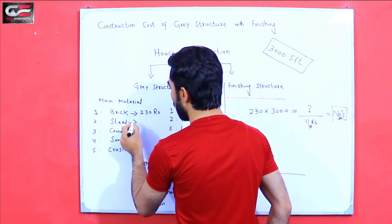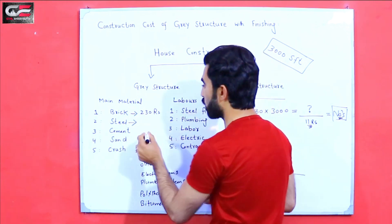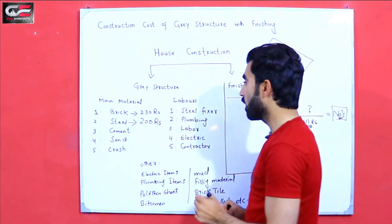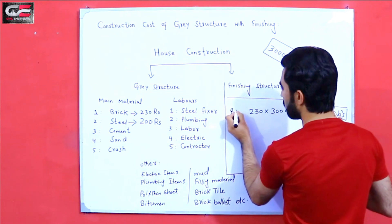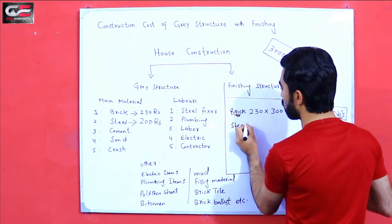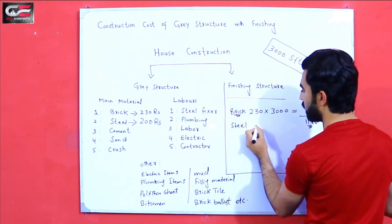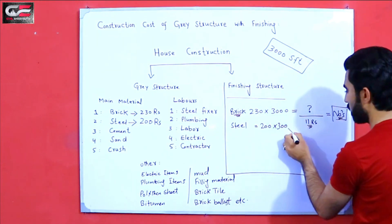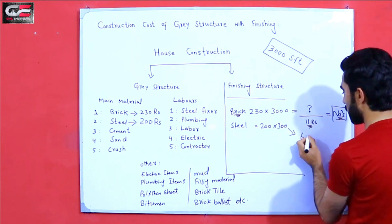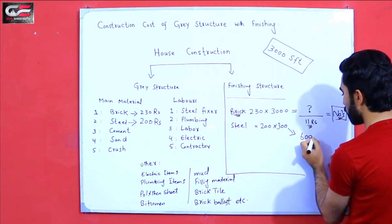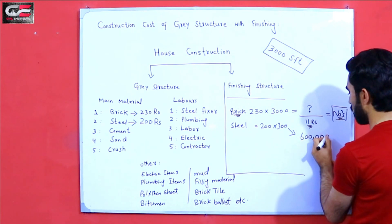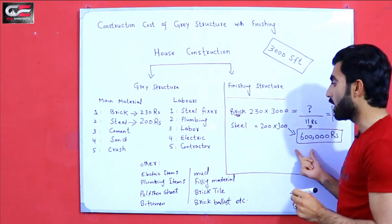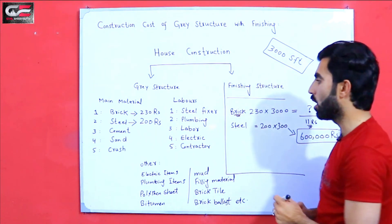The steel cost was 200 rupees per square feet — this is the current rate in 2020. To find the total, multiply 200 by 3000, which gives 600,000 rupees, that is 6 lakh rupees for steel for 3000 square feet house construction.